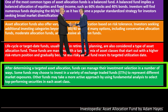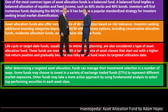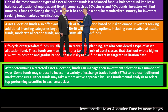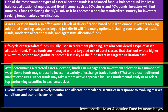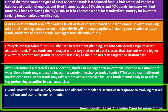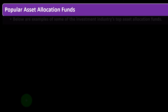After determining a targeted asset allocation, funds can manage their investment selection in a number of ways. Some funds choose to invest in a variety of ETFs to represent different market exposure. Other funds take a more active approach, using fundamental analysis to select top-performing securities in each asset class. Overall, most funds will actively monitor and rebalance securities in response to evolving market conditions and economic environments.